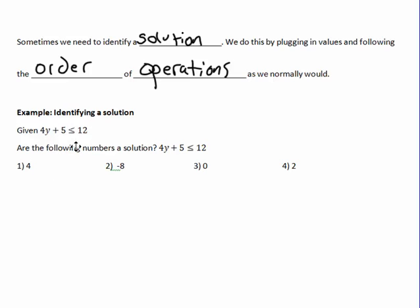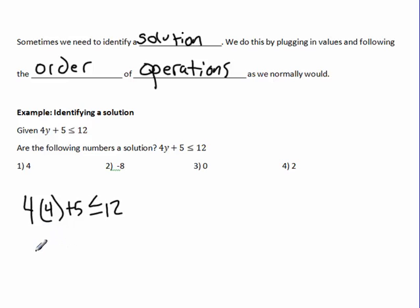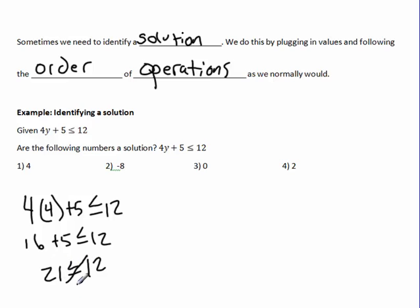Testing y = 4: we get 4 times 4 plus 5, which is 16 plus 5. Is 21 less than or equal to 12? No — so 4 is not a solution.